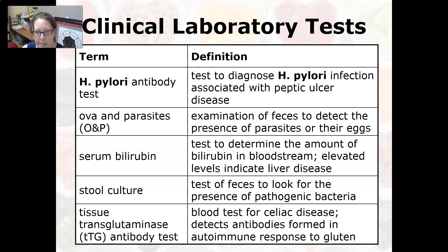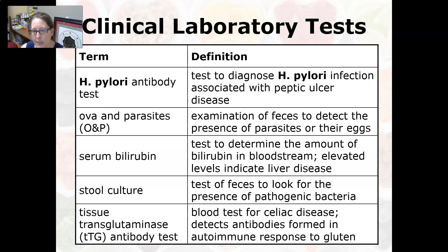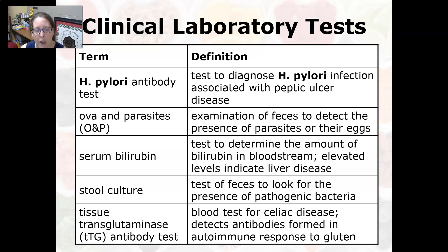The H. pylori antibody test is a test to diagnose H. pylori infection that is associated with peptic ulcer disease. Ova and parasite is a stool sample that is collected and examined to detect the presence of parasites or their eggs. Serum bilirubin is a test to determine the amount of bilirubin in the bloodstream; elevated levels indicate liver disease and will cause jaundice.